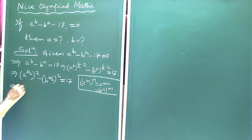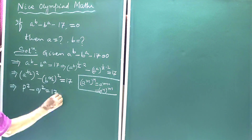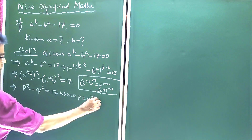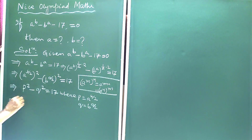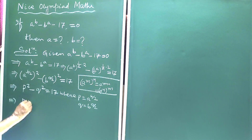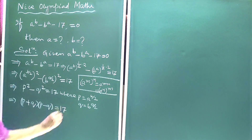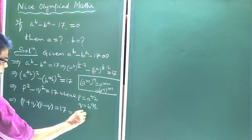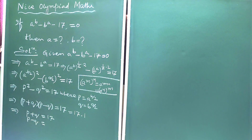So this implies p squared minus q squared is equal to 17. This implies p plus q into p minus q is equal to 17. Since 17 is a prime number, it can be factored as 17 times 1. This implies p plus q is equal to 17 and p minus q is equal to 1.